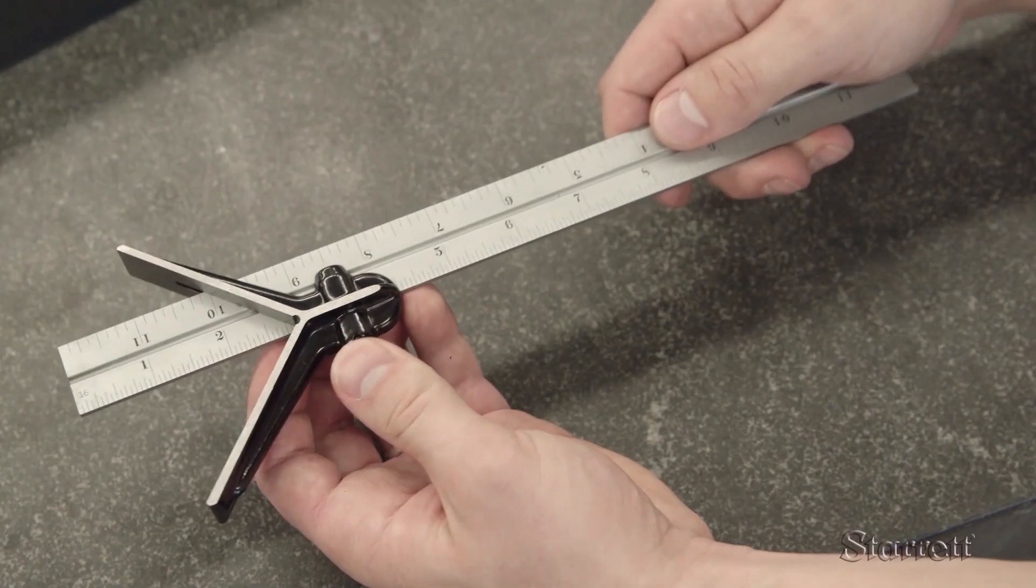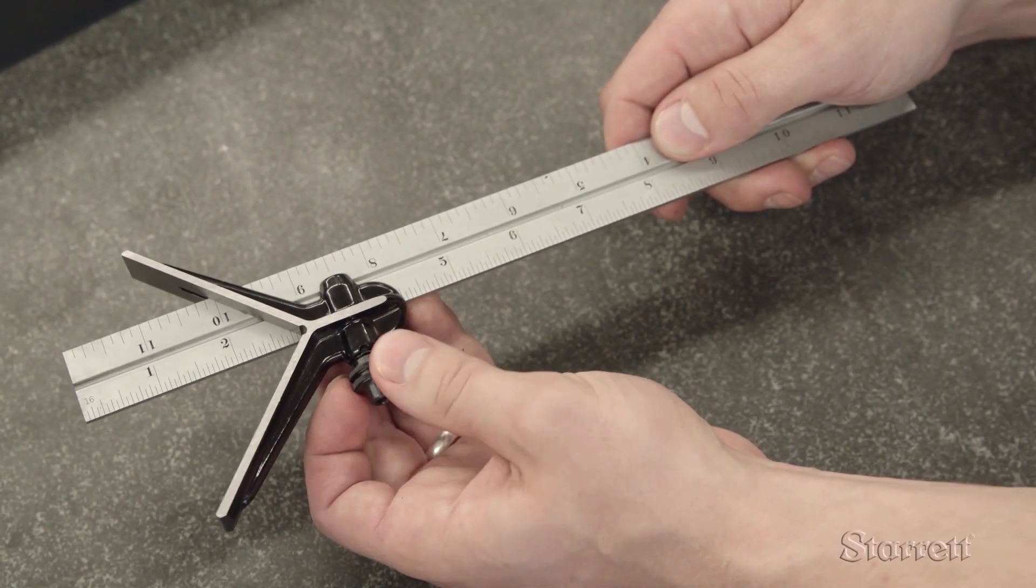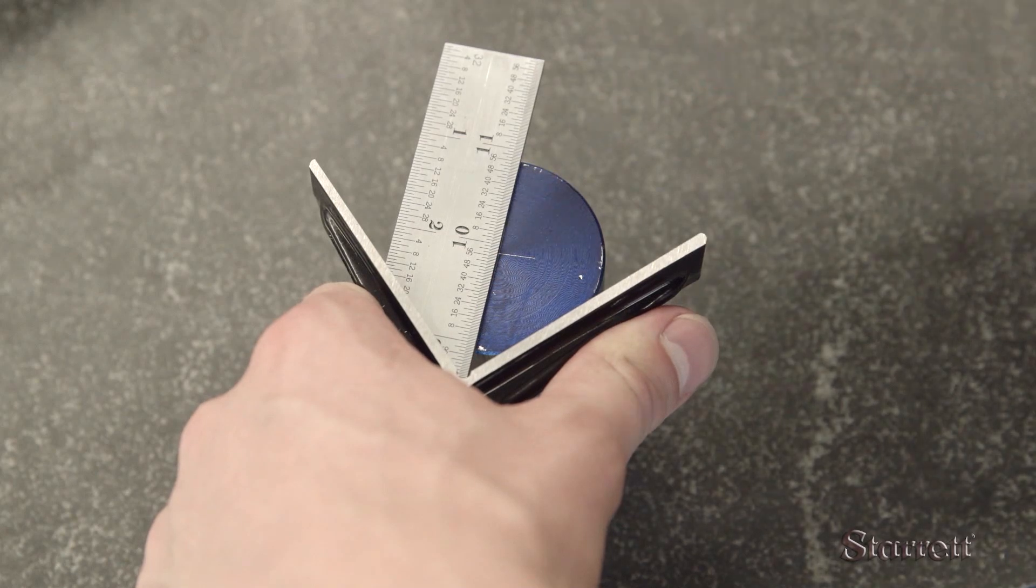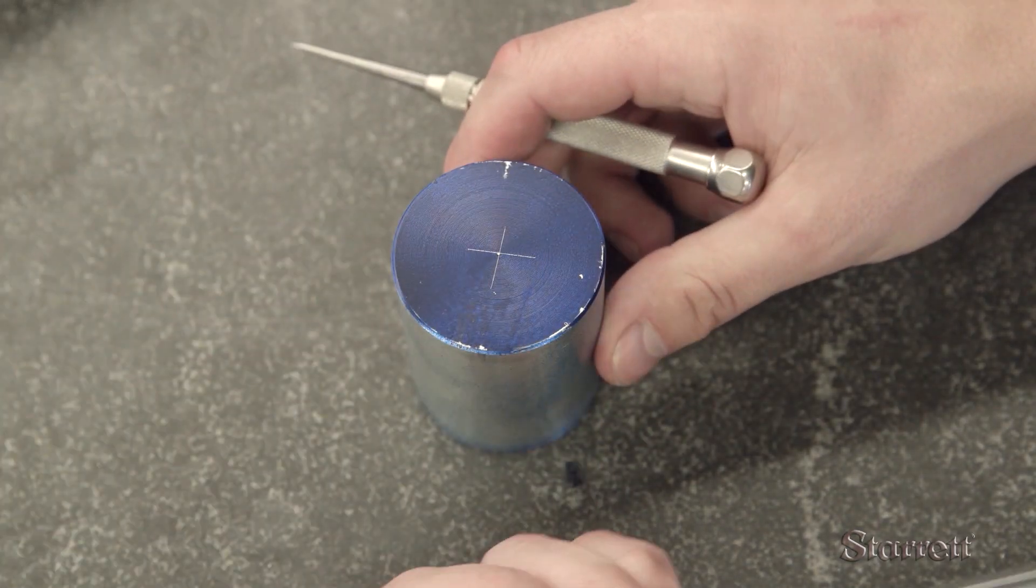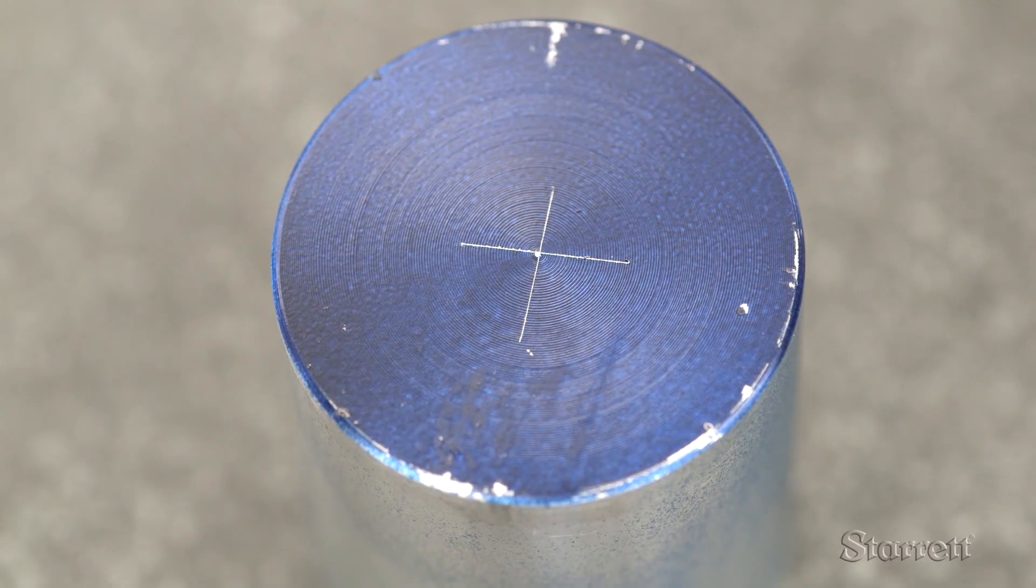Now, let's switch to the center head. This is the tool you need to find the center of a piece of round stock, useful for preparing a workpiece for a cylindrical grinder or lathe tailstock.